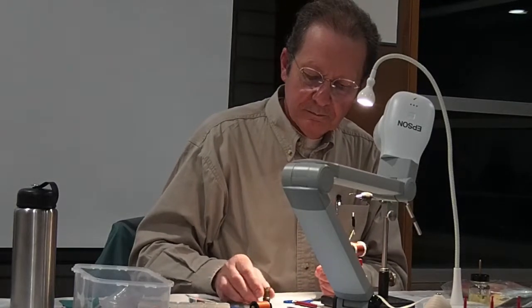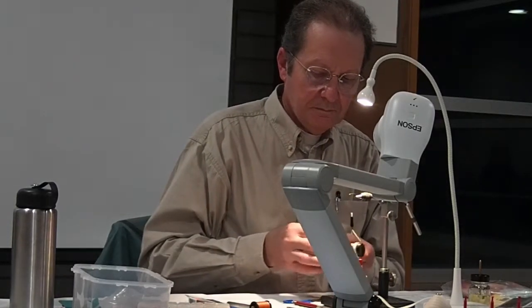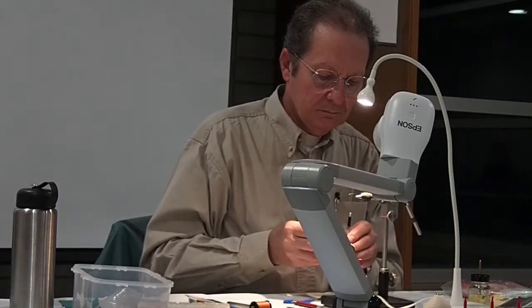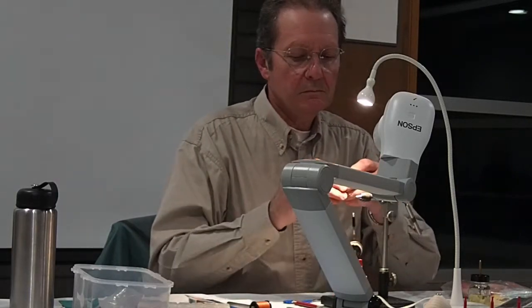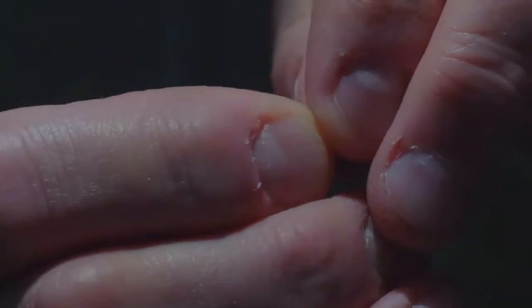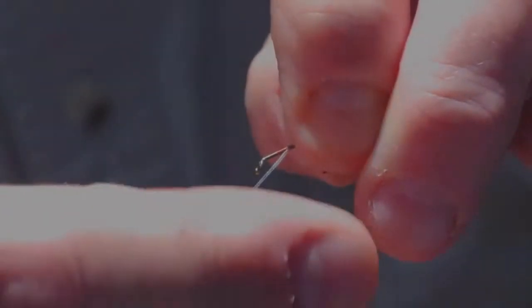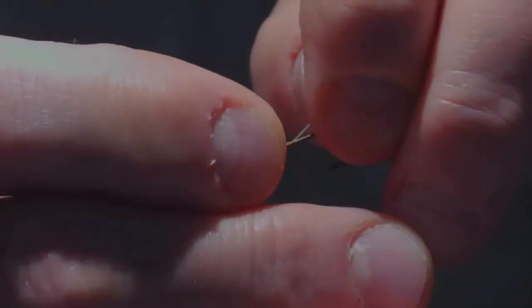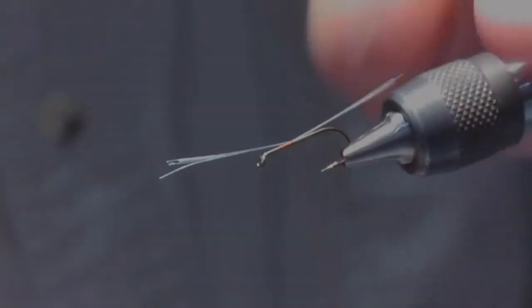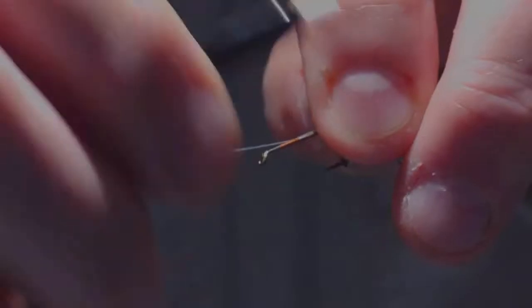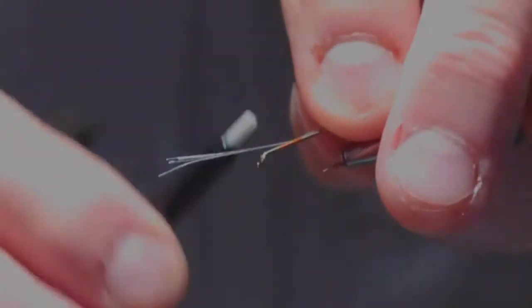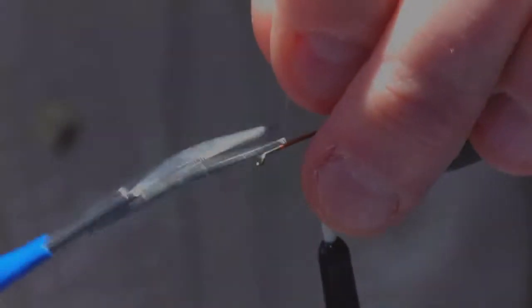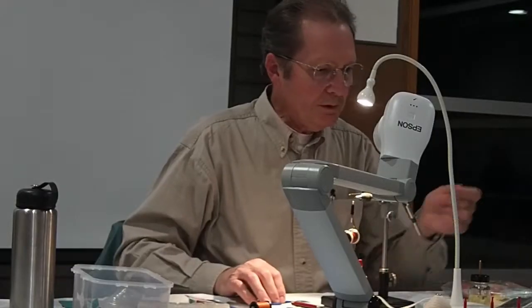You can also use moose mane. Now, the tails are quite long, at least as long as the body. You can adjust once you've got them tied onto the top of the hook. You can adjust the length by pulling in either direction. And just hold them to make sure they stay on top of the hook as you wind back. Now, there's a number of ways you can separate the tails.